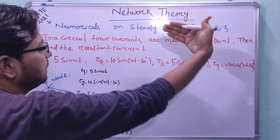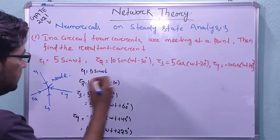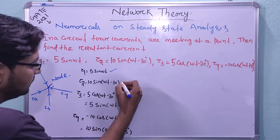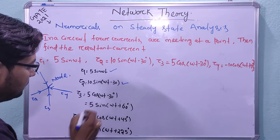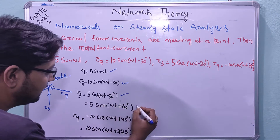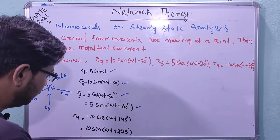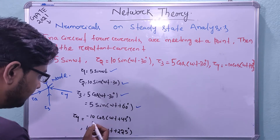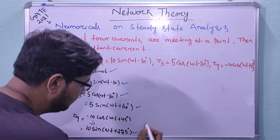Before applying node analysis, let us arrange the currents. i1 = 5 sin(ωt), i2 = 10 sin(ωt − 30°), i3 = 5 cos(ωt − 30°) which converts to 5 sin(ωt + 60°), and i4 = −10 cos(ωt + 45°) which converts to 10 sin(ωt + 225°).